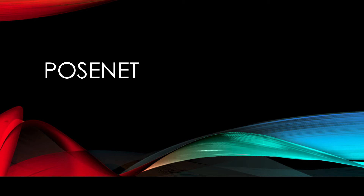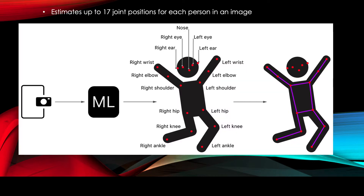Welcome to this course on PoseNet, a deep learning model used for detecting poses on the human body. PoseNet can estimate up to 17 key joints on the human body for each person in an image. These 17 joints include the nose, right eye, left eye, right ear, and left ear.